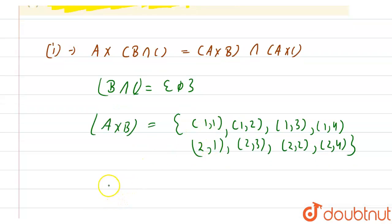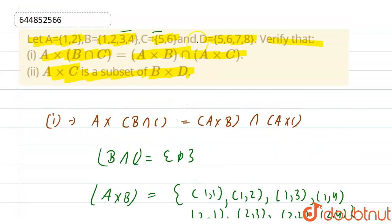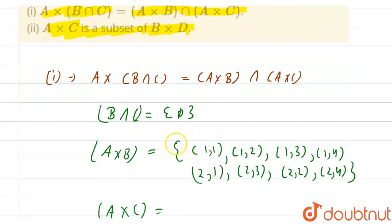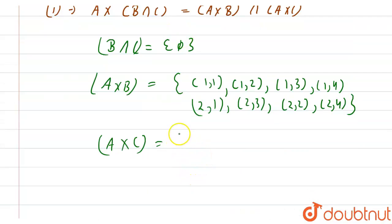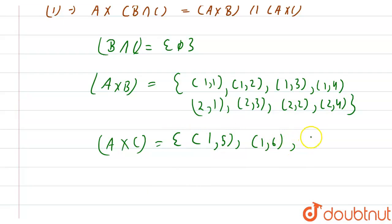Now let's find A×C. A = {1, 2} and C = {5, 6}. So A×C = {(1,5), (1,6), (2,5), (2,6)}.